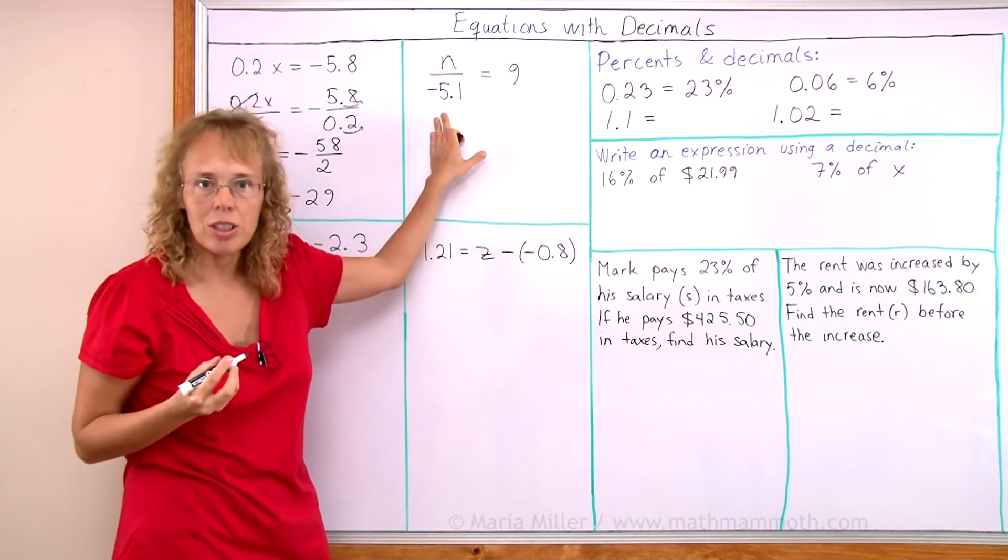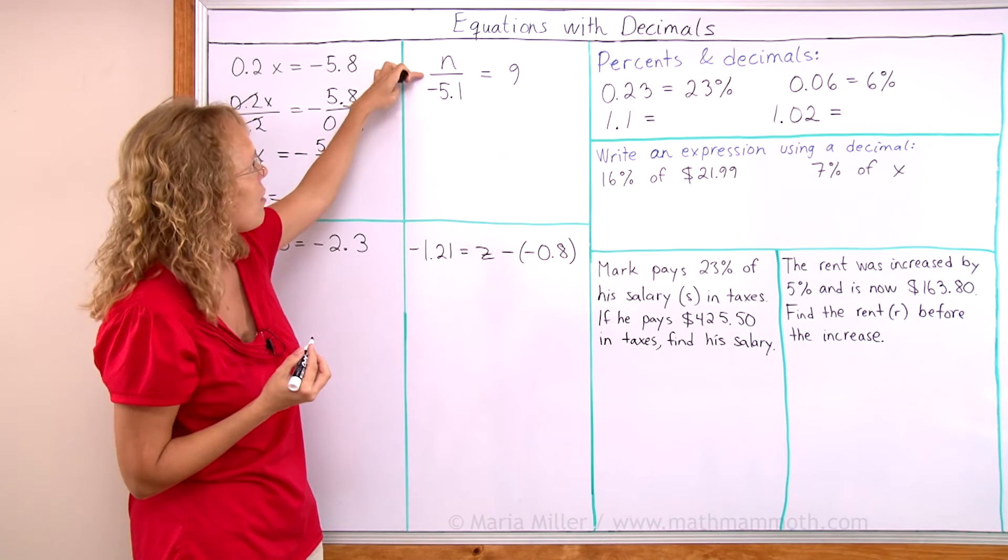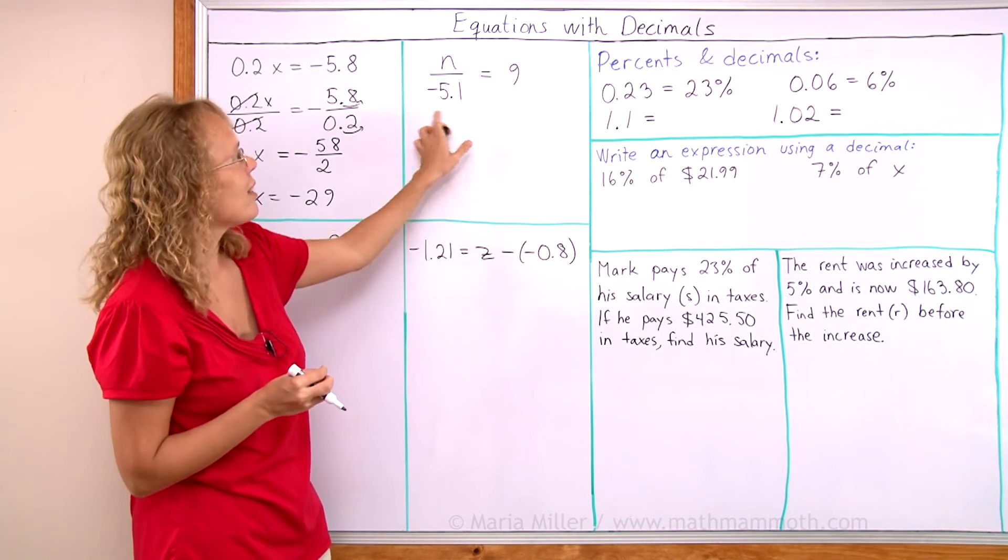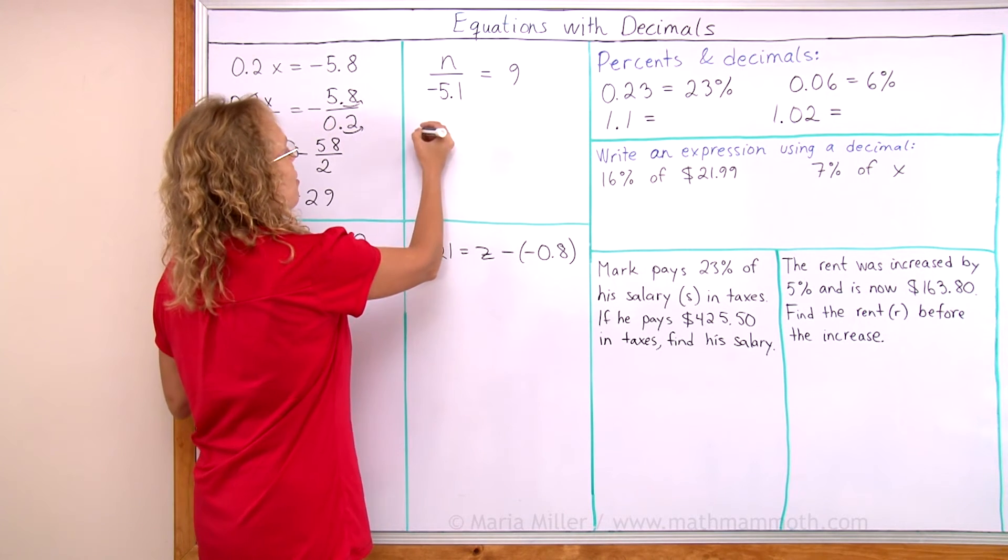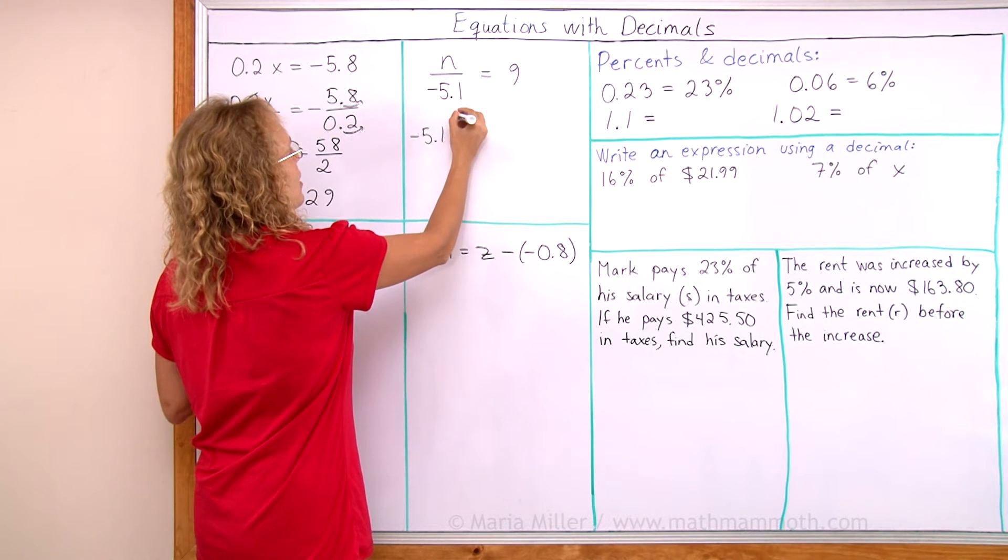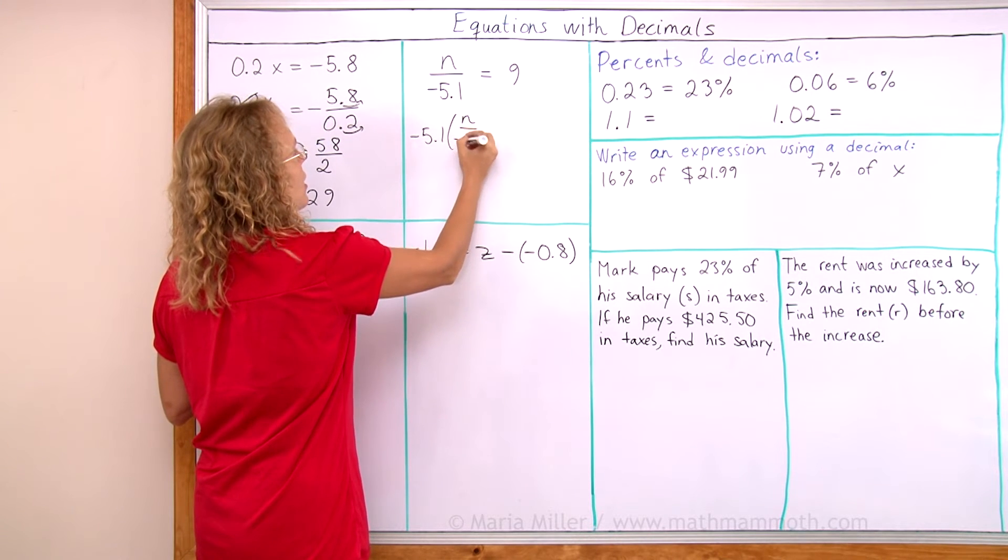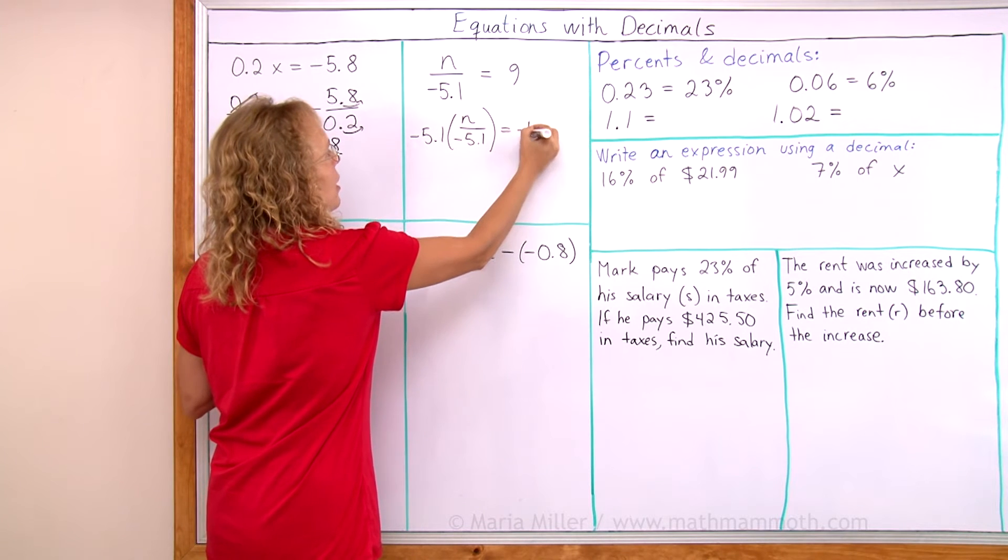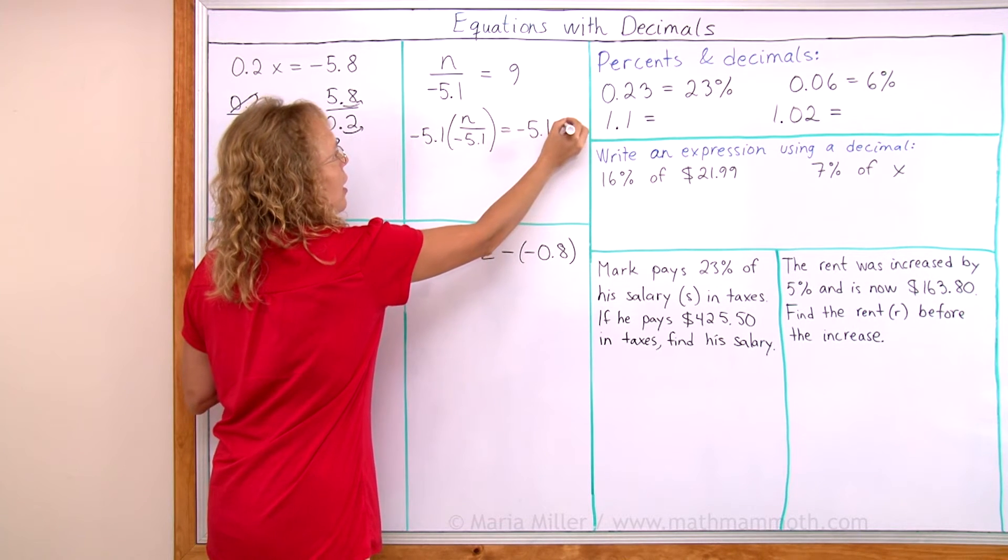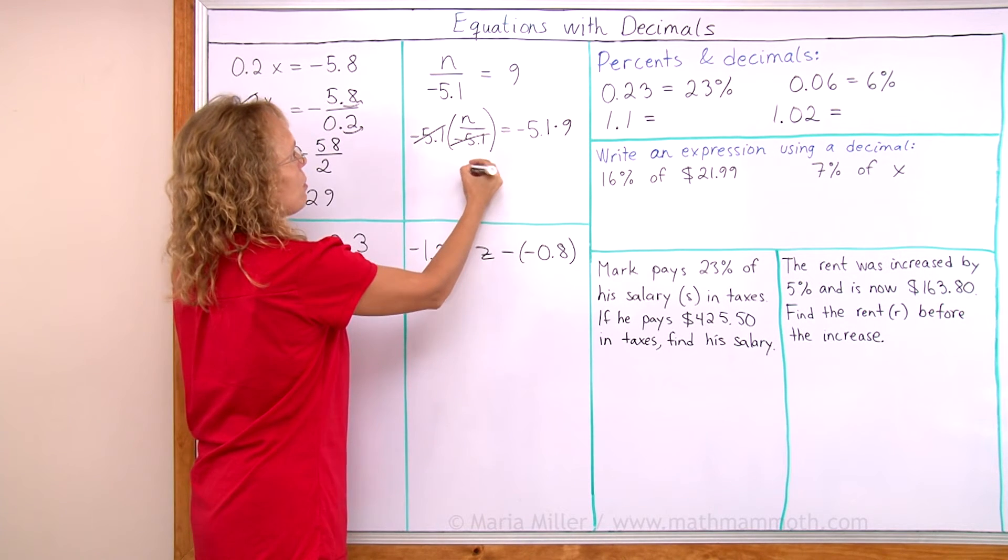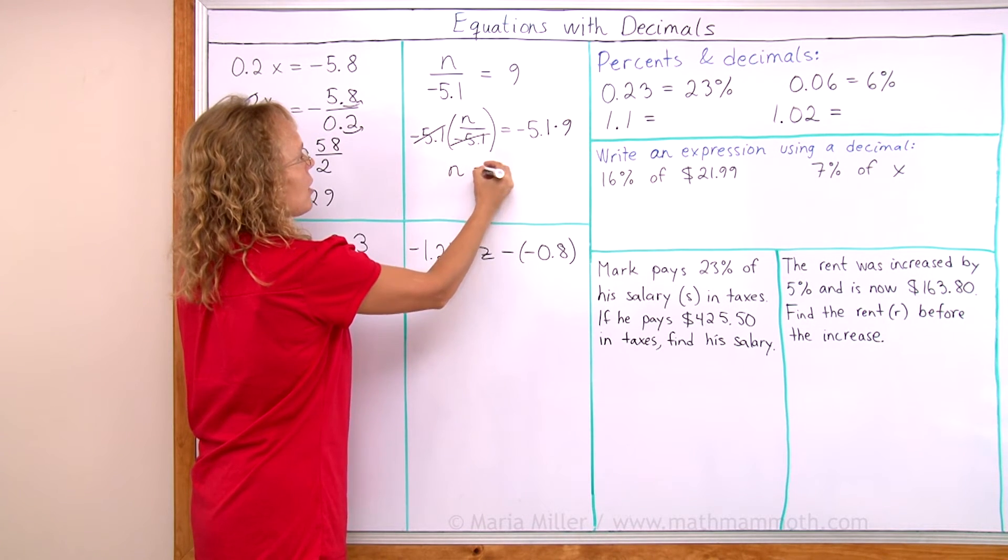This is a division equation because the variable is divided by something. So we solve it by multiplying both sides by this number. So we multiply negative 5.1 times this n over negative 5.1. Then on this side the same thing negative 5.1 times 9. And here of course these now cancel so we get n alone which is what we want and it's now isolated.